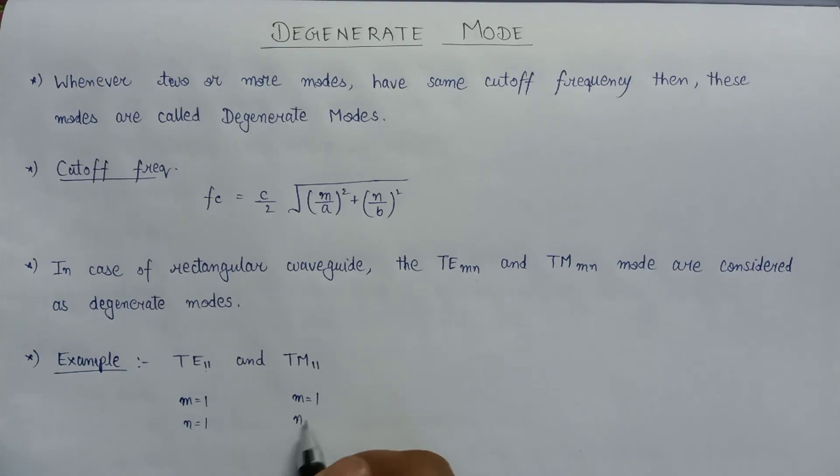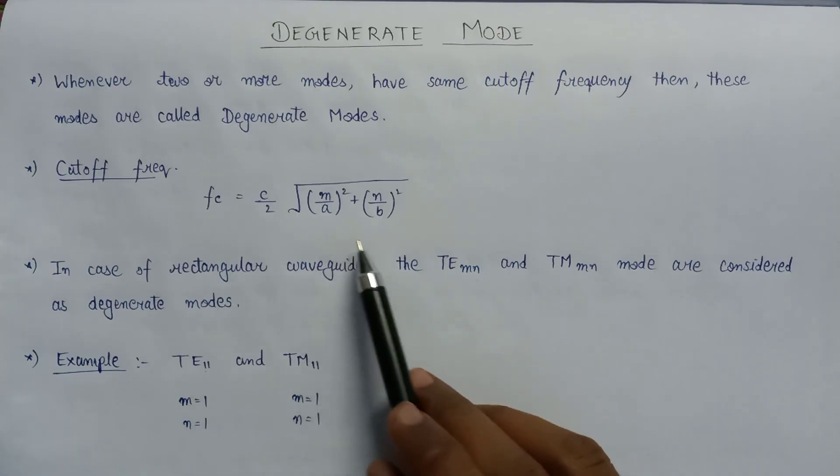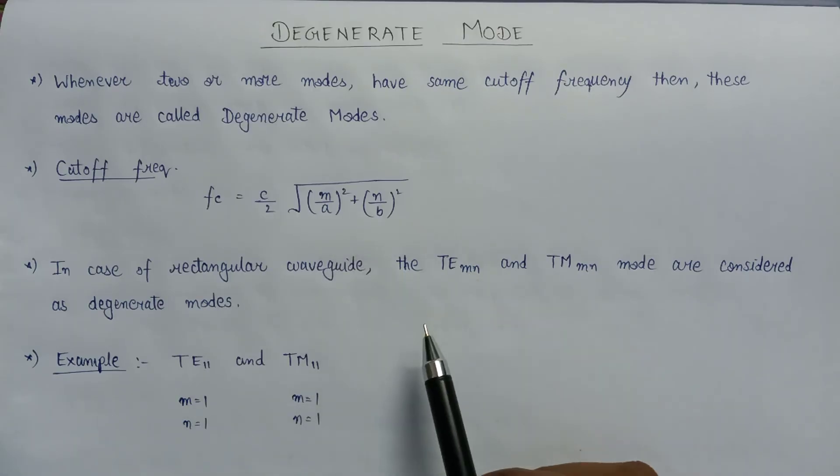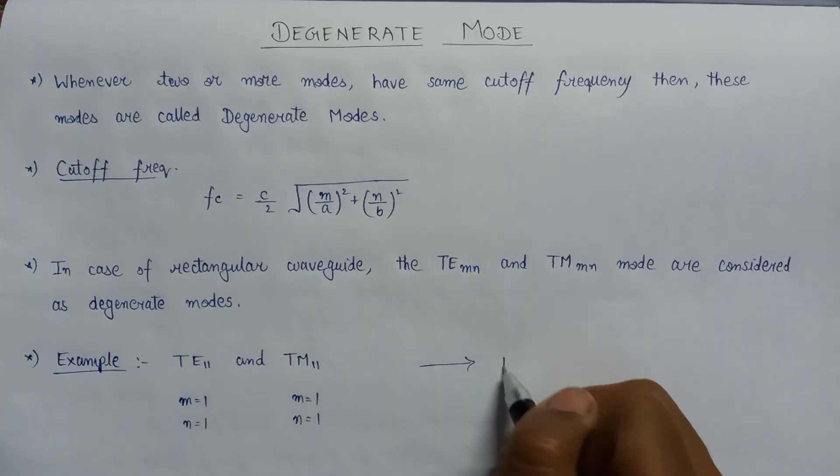And here also m value is 1 and n value is 1. If we calculate the cutoff frequency for these two modes, they have the same cutoff frequency. That's why we can say that these two are considered as degenerate modes.